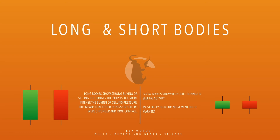With short bodies, we would have a very small body with both upper and lower wicks. It's important to understand the difference between these two because the short bodies show very little buying or selling activity, most likely due to no movements or people being undecided on direction. The long bodies show strong buying or selling activity — the longer the body, the more intense the buying or selling pressure. This means either buyers or sellers fully took control.